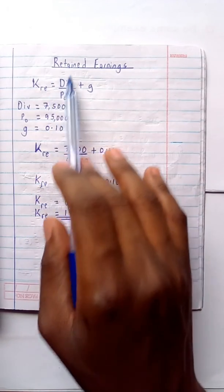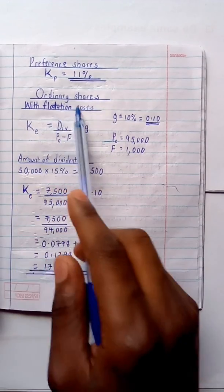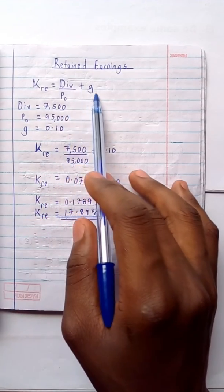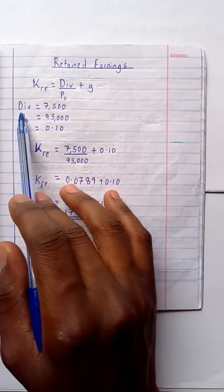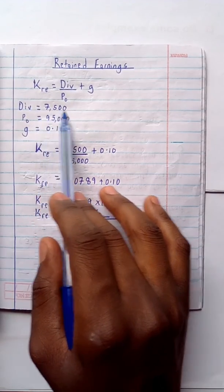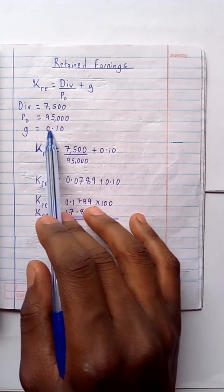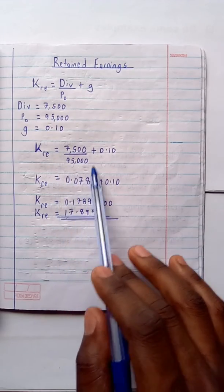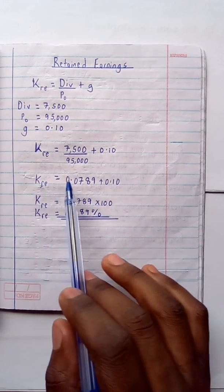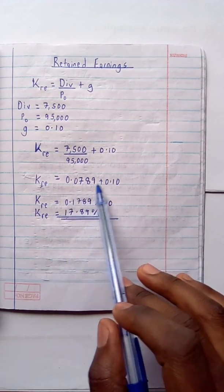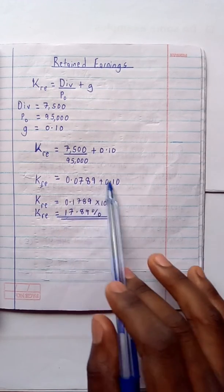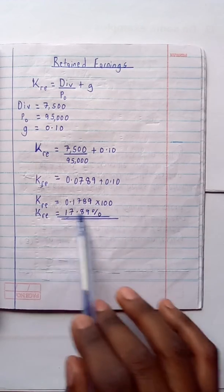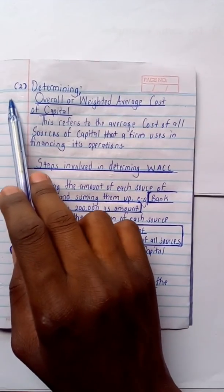For retained earnings, they are equal to ordinary shares but without flotation costs. The formula is: cost of retained earnings = dividend ÷ P₀ + G. Using D = 7,500, P₀ = 95,000, and G = 0.10: cost of retained earnings = 7,500 ÷ 95,000 + 0.10 = 0.0789 + 0.10 = 0.1789, which equals 17.89%.